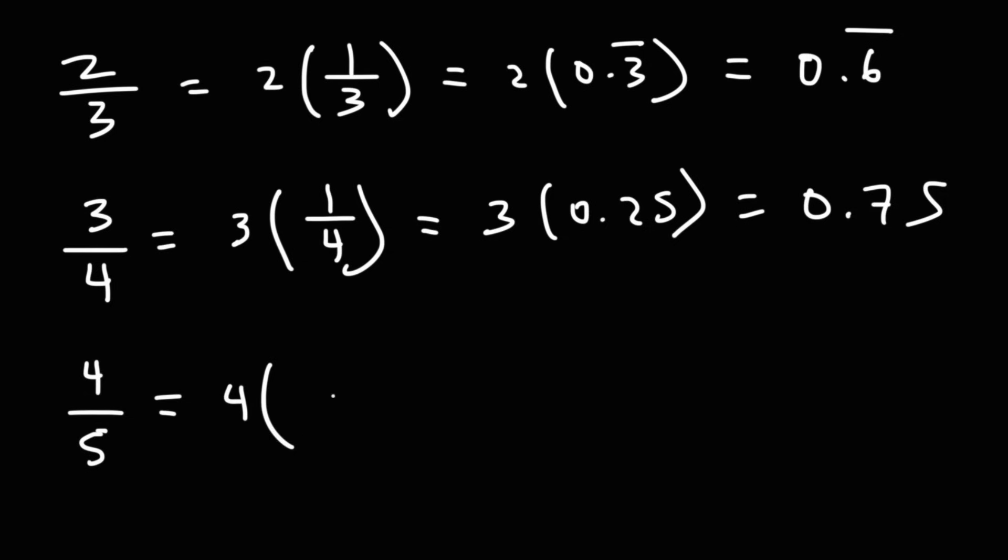Now 4 fifths. This is 4 times 1 over 5. We know that 1 over 5, that's on the list, that's 0.2. 4 times 2 is 8, so 4 times 0.2 is 0.8. See how fast you can convert a fraction to a decimal if you know those numbers?